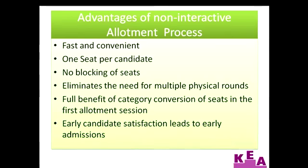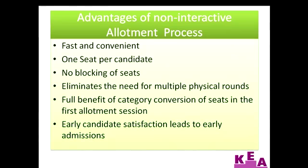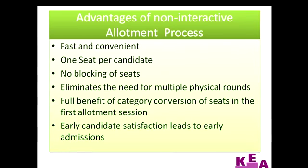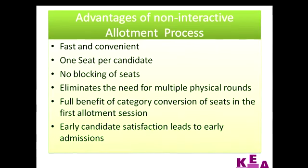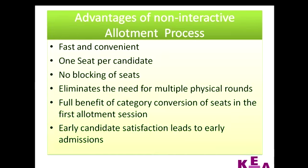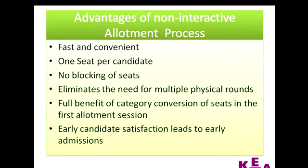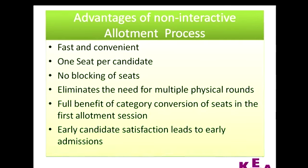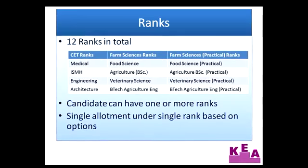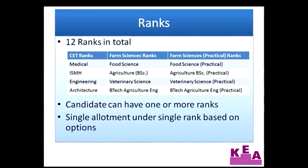Candidates need not participate in multiple physical rounds to get the full benefits of category conversion of seats. The benefits of seat category conversion are fully delivered to all candidates in the first session of allotment. The process guarantees the best of the best seat allotment as per the existing seat matrix in the first session itself, and the only benefit of participating in further allotment sessions would be for seats not admitted or surrendered after the first session. This will lead to earlier candidate satisfaction and early admissions to college. The allotment process of CET 2013 performs allotment based on 12 different ranks, which may be divided into three major categories: the CET ranks — that is, Medical, ISMH, Engineering and Architecture ranks.